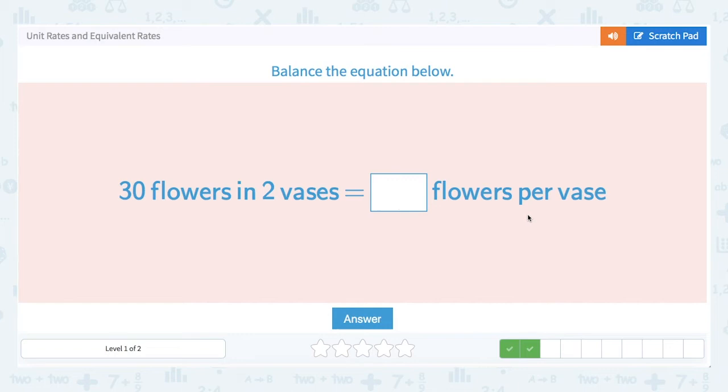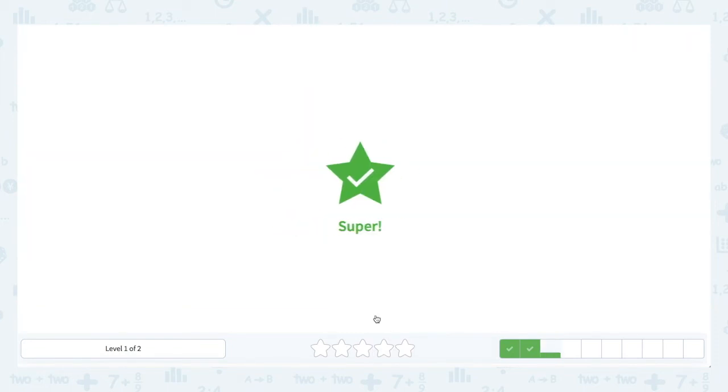30 flowers in two vases is how many flowers per vase? Well, this one is probably easier to envision than the other two. If I have 30 flowers, I'm simply going to divide them in half. You can probably do that mentally. Half of 30 is 15. So I will have 15 flowers in each of those two vases.